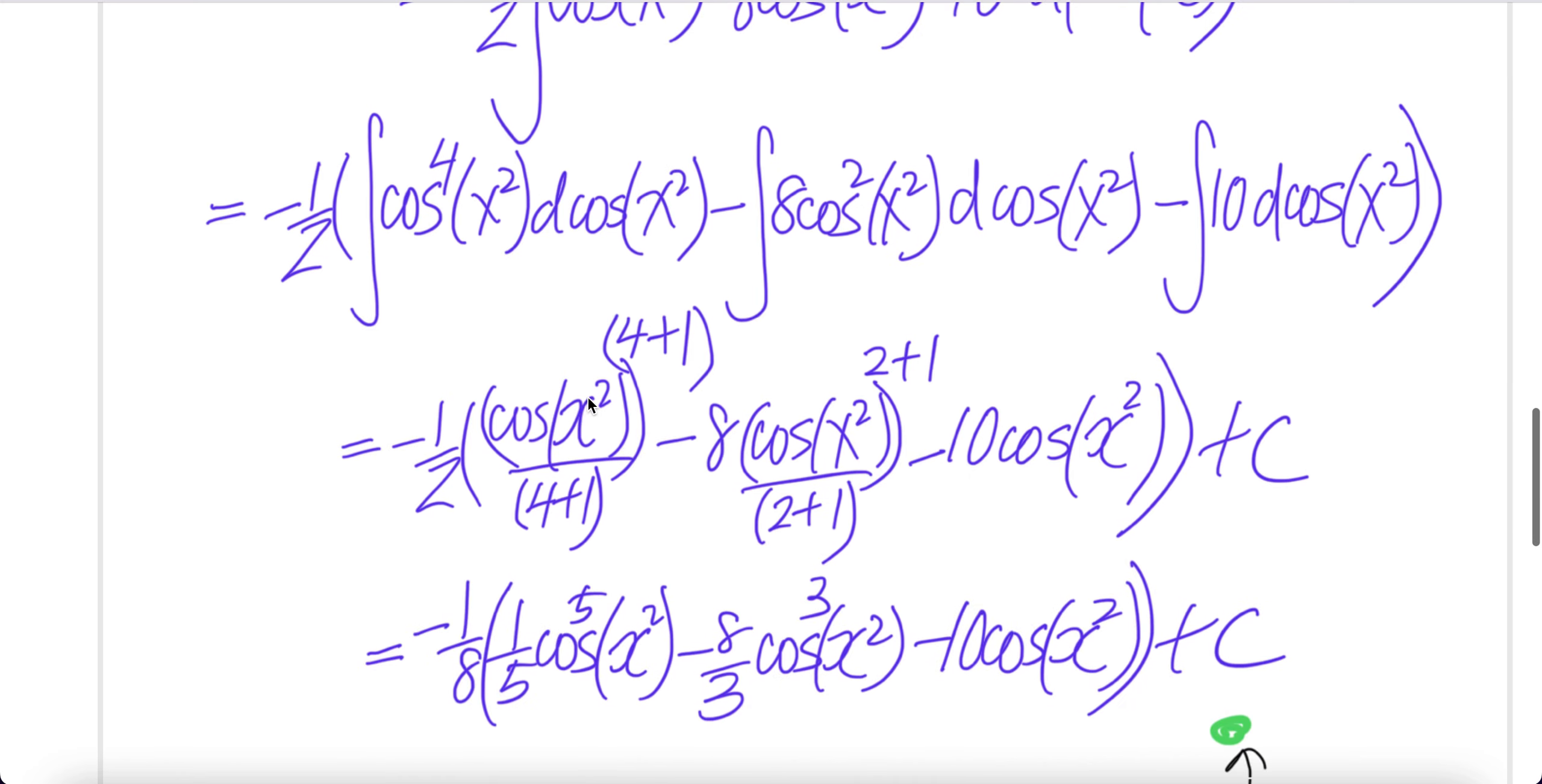Integral of this is cos x squared, 4 plus 1 over 4 plus 1. Here, 8 out, cos x squared, 2 plus 1 over 2 plus 1. Here, then out, and then integral of this cancel, you get cos x squared.